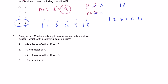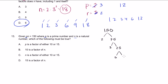Problem 13. Given p times n equals 150, where p is a prime number and n is a natural number, which of the following must be true? What are all the possible values for p? To do that, we need the prime factorization of 150. That's 2 times 75; 75 is 3 times 25; 25 is 5 times 5. So 150 equals 2 times 3 times 5 times 5. That's its prime factorization. So p could be any of these numbers.